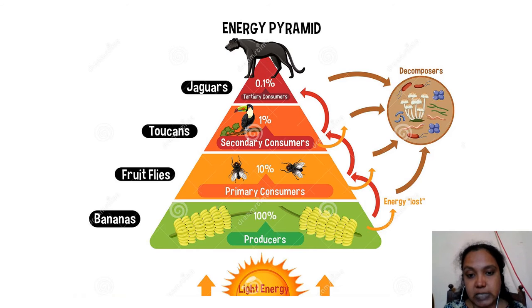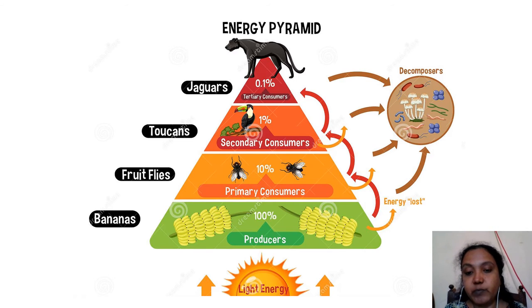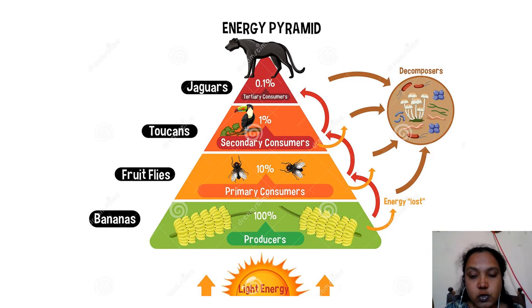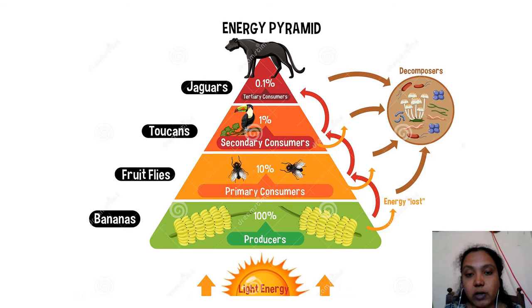The quaternary consumers, which is us, are using only 0.01 percent of the energy from the producers. This shows the transfer of energy from the producers to the tertiary or quaternary consumers in a linear way. Remember, we are omnivores — we also eat plants, that is the producers, and so we also use 10 percent of the energy in the energy pyramid, meaning we come down to the primary consumer level of energy. So organisms are scattered across the primary, secondary and tertiary levels depending upon what kind of organisms we are eating.